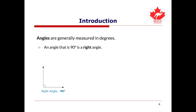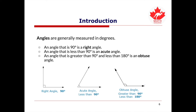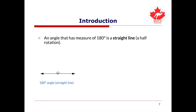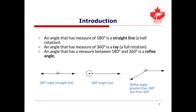A 90-degree angle is a right angle. An angle that is less than 90 degrees is an acute angle. An angle that is larger than 90 degrees but less than 180 degrees is an obtuse angle. A visual representation of the three kinds of angles are shown on the screen. An angle that is 180 degrees is a straight line, or a half rotation. An angle that is 360 degrees is a full rotation. An angle that is greater than 180 degrees and less than 360 degrees is a reflex angle. The three different angles are shown on the screen.